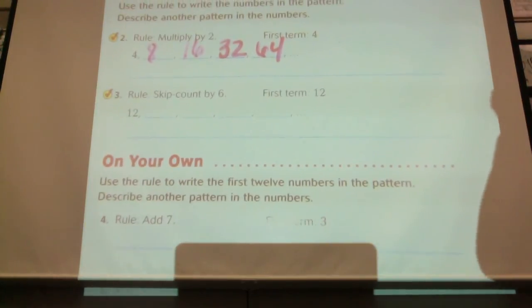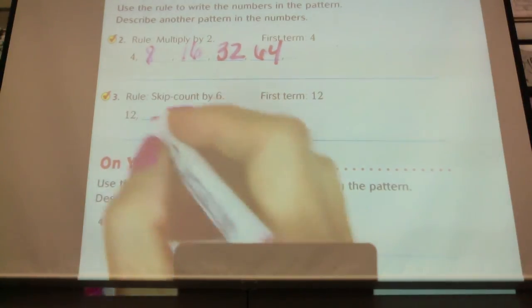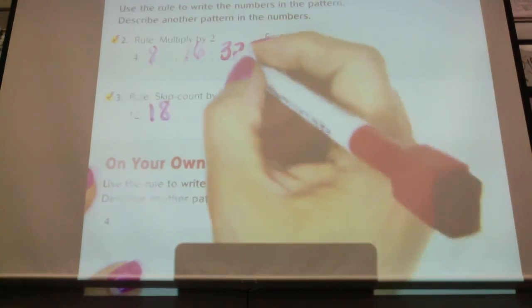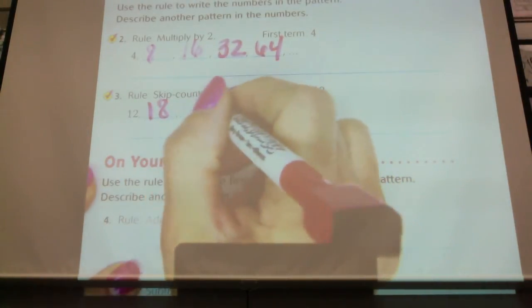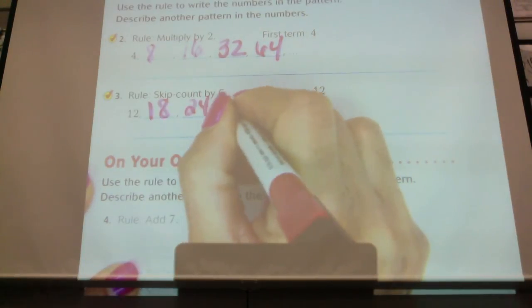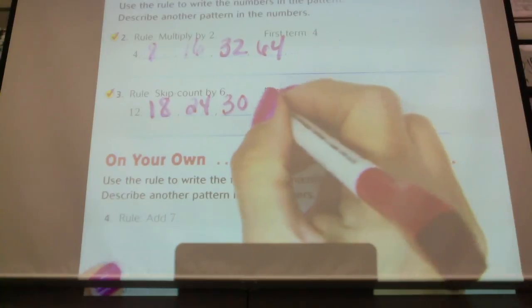All right. This one tells us to go ahead and skip count by six. If the first term is twelve, the next one will be? Eighteen. Go ahead and finish it. What was six, eighteen plus six was? Twenty-four. What was next? Thirty. Thirty. Thirty-six.